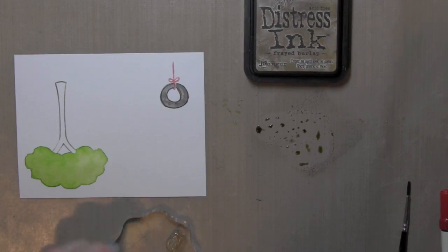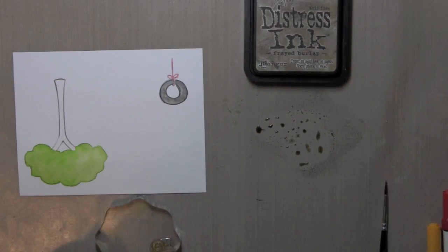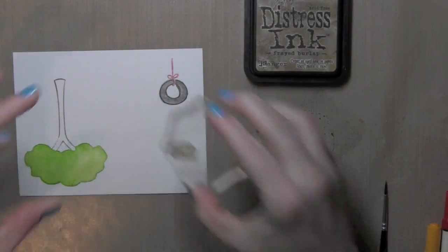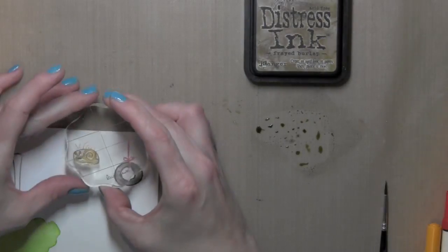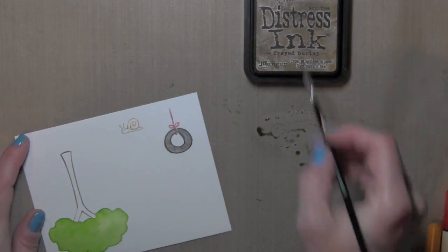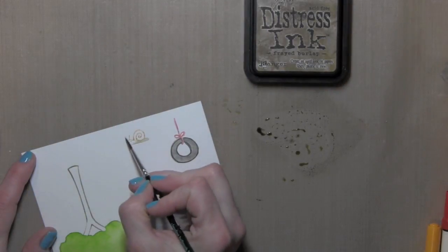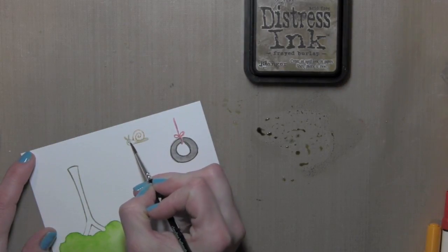I'm going to be stamping the cute snail from the Critters and the Burbs stamp set, and I'm using a little spiced marmalade, and I believe the brown that I used for this part was maybe the gathered twigs.